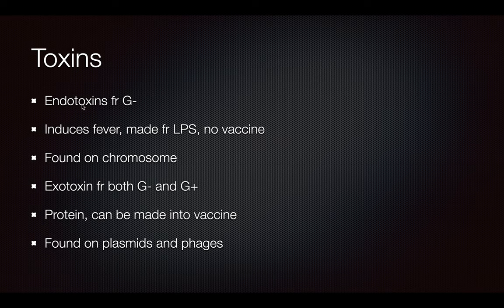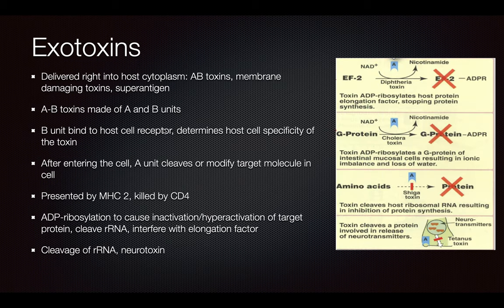Endotoxins come from gram-negative cells — they're actually due to the LPS in the layer between the two cell membranes. Endotoxins are particularly dangerous because they're made from LPS, which doesn't have a vaccine, and it's found on the chromosome of the bacteria. Exotoxins are found in both gram-negative and gram-positive bacteria. Since exotoxins are proteins, they can be made into a vaccine, unlike endotoxins which are lipids. Exotoxins are also found on plasmids and phages, so these can be isolated. Exotoxins are going to be delivered straight into the host cytoplasm, and those include the AB toxins, the membrane-damaging toxins, and the superantigens.